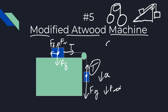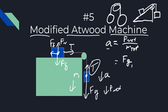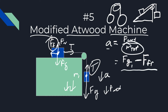A question they'll often ask is: what is the acceleration? Conceptually, acceleration equals net force divided by total mass. The thing accelerating the system is the force of gravity on the hanging mass — call it mass 1. Friction opposes that force. So net force is the force of gravity of mass 1 minus friction, and we divide by the total mass, which is m1 plus m2.